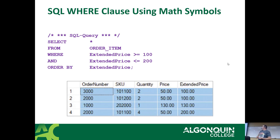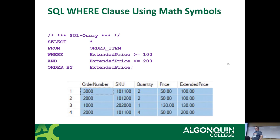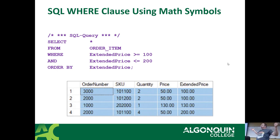The next WHERE clause uses math symbols. The example shows: SELECT stuff FROM order_item WHERE extended_price >= 100 AND extended_price <= 200. Notice there are two predicates joined by the word AND. It's literally saying: anything that is 100 or more AND 200 or less — give it to me. So it gives everything from 100 to 200 for the price. The AND allows you to add more filters, building from left to right. It always goes AND first, then OR.